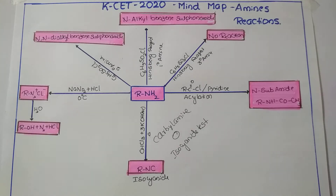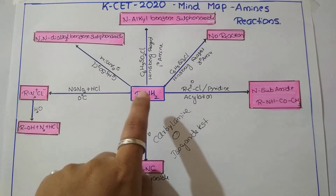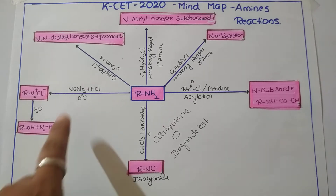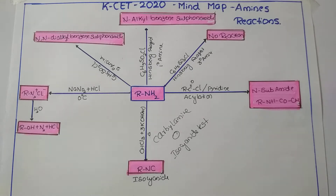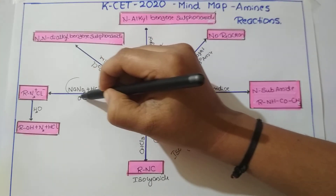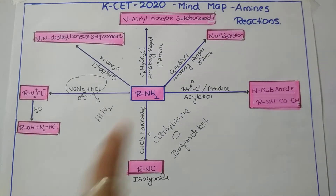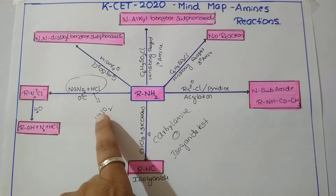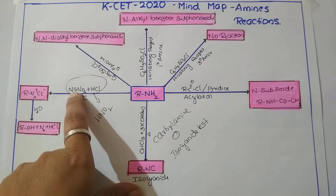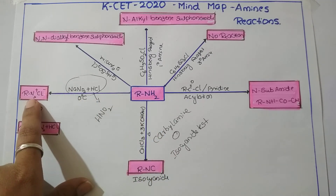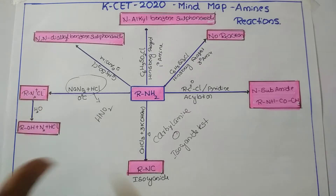The next reaction is diazotization. When amine is treated with a mixture of sodium nitrite and HCl at 0°C (cold condition), these two reagents together produce nitrous acid in the reaction. When amine is treated with nitrous acid formed by NaNO2 and HCl at 0°C, it results in the formation of the respective alkyl or aryl diazonium chloride.